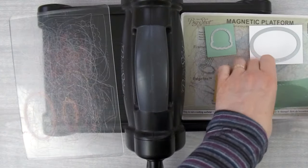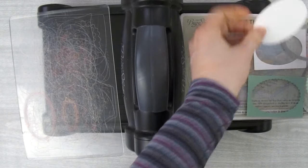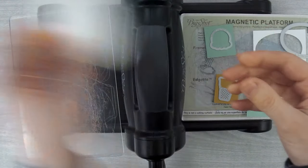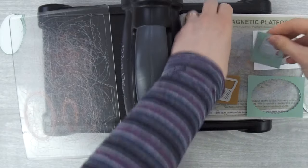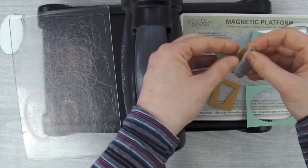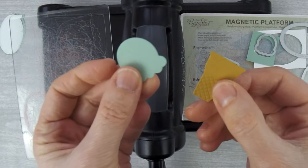So we've got our two ovals and they'll layer up like that. Then I've got my ice cream scoop and I've got my ice cream cone.